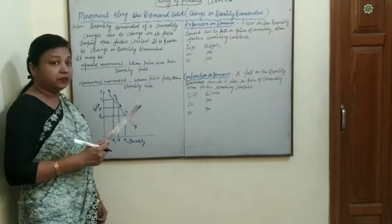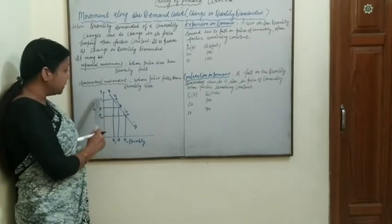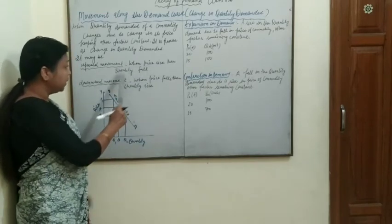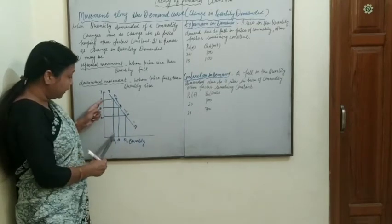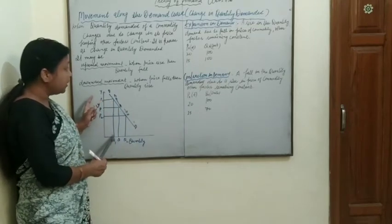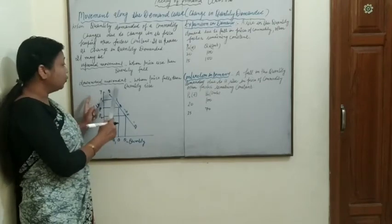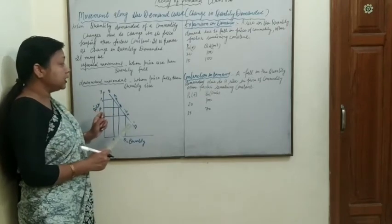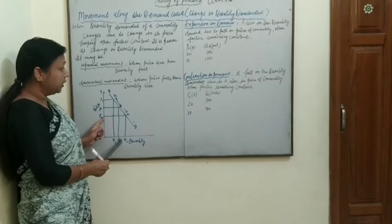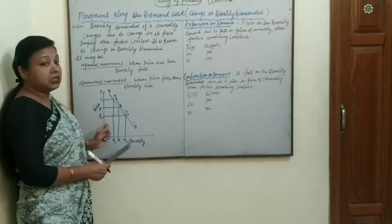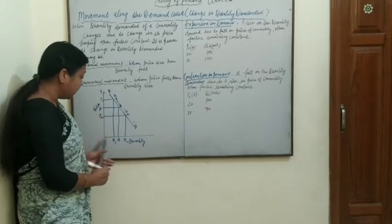Whenever there is an upward movement on the curve, when price rises, then quantity falls. If price rises and quantity falls, that is called upward movement. And downward movement means when price falls, quantity demanded increases — that is called downward movement along the curve.